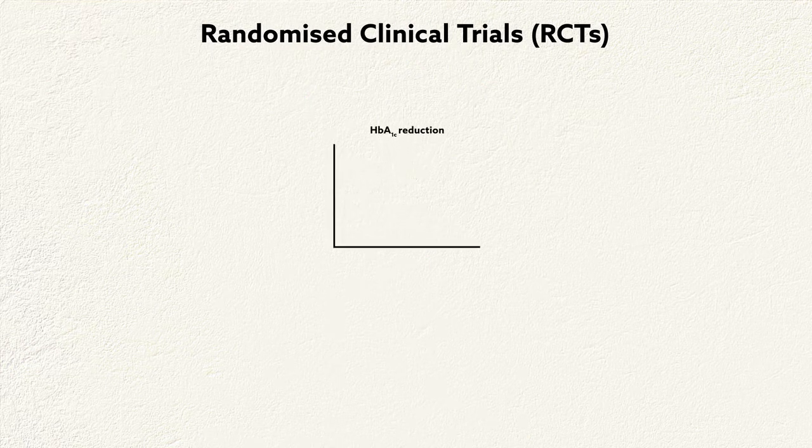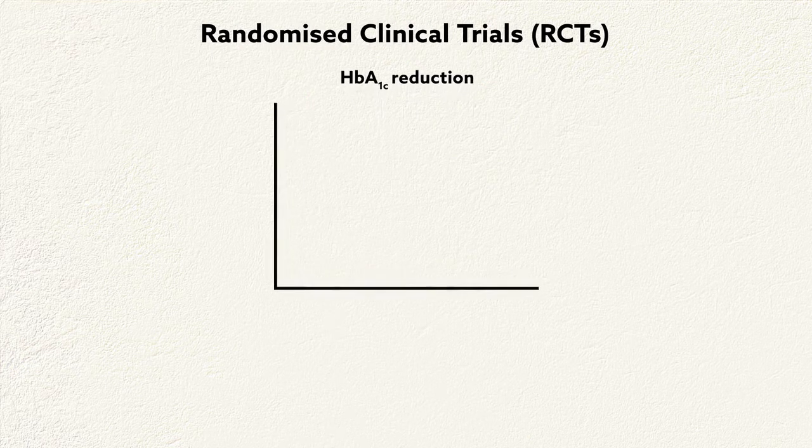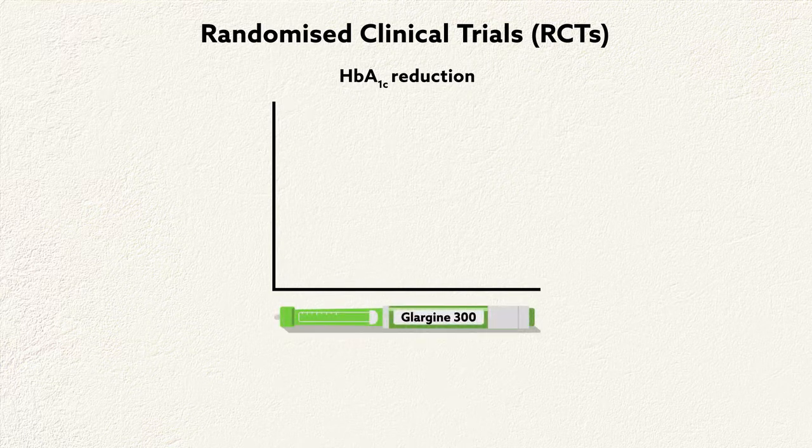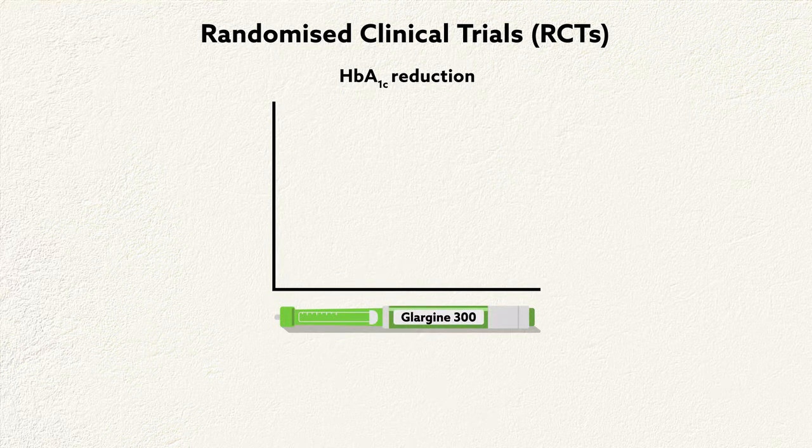In randomized clinical trials, or RCTs, use of second-generation basal insulin analogs such as insulin glargine 300 units per milliliter, known as glargine 300,